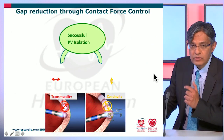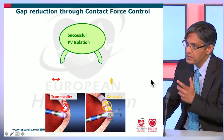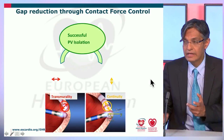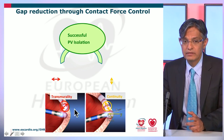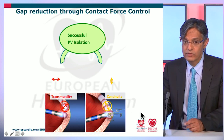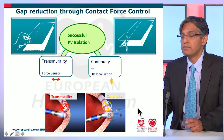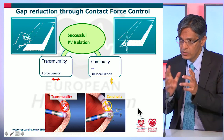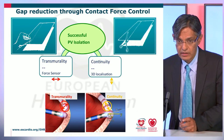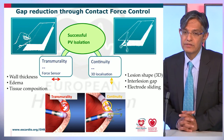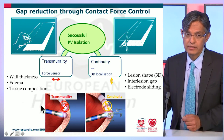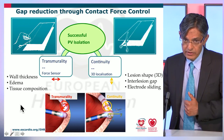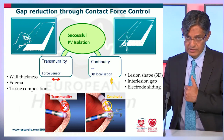The ultimate aim of catheter ablation for complex arrhythmias including atrial fibrillation is to create continuous and transmural lesions — two components. Transmurality is predominantly determined by energy delivery and contact force, whereas continuity depends on 3D localization and establishing contiguity between adjacent borders of complete transmural lesions. Lesion shape, inter-lesion gap, and electrode sliding are all important for continuity, whereas wall thickness, edema, and tissue composition become important parameters for transmurality.